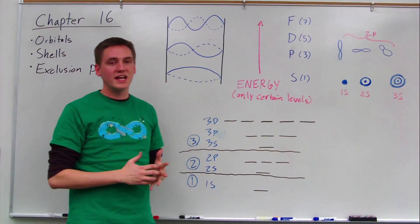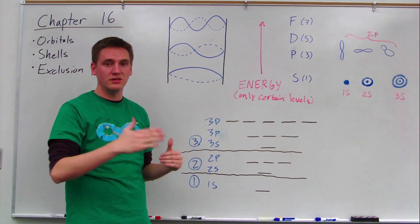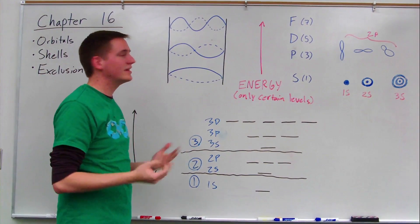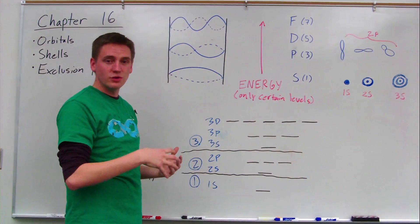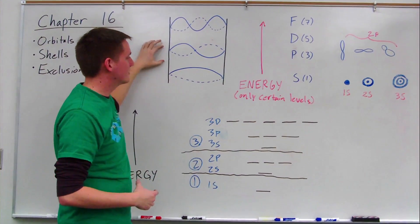And this model explains why we have certain energy levels like in the Bohr model, because he didn't know how to explain that. But now that we think of these orbitals as standing waves, they can only exist at certain energies. They can't exist in between.